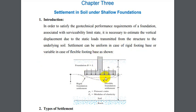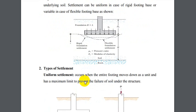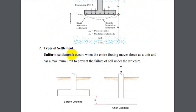هذا اللود مقسوماً على مساحة الأساس يعطينا q-not أو delta q_s مثلما أخذنا بالفصل الأول. وعليه إذا كان الأساس مرناً (flexible)، فإن مقدار الهبوط تحت مركز الأساس يكون أكثر من الأطراف، بينما لو كان الأساس صلباً (rigid) فإن مقدار الهبوط يكون متساوياً على امتداد عرض الأساس. ننتقل إلى أنواع الهبوط (types of settlement).